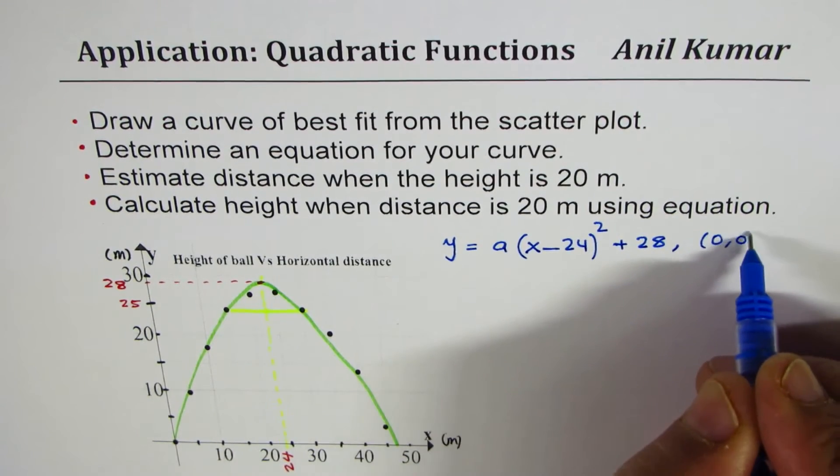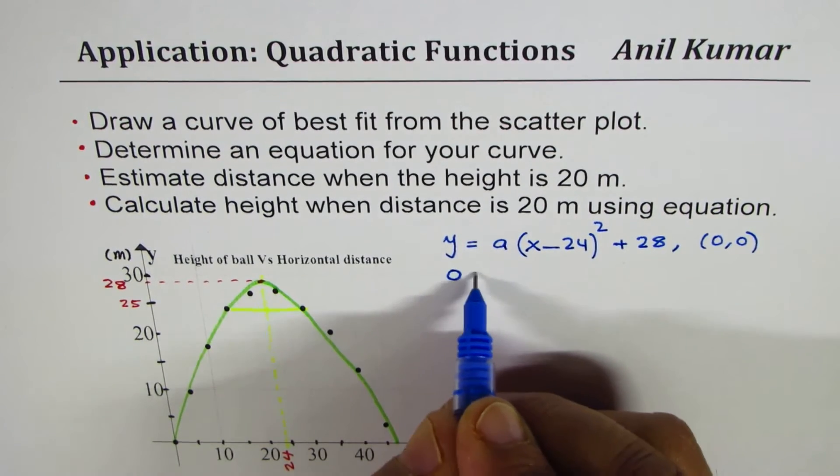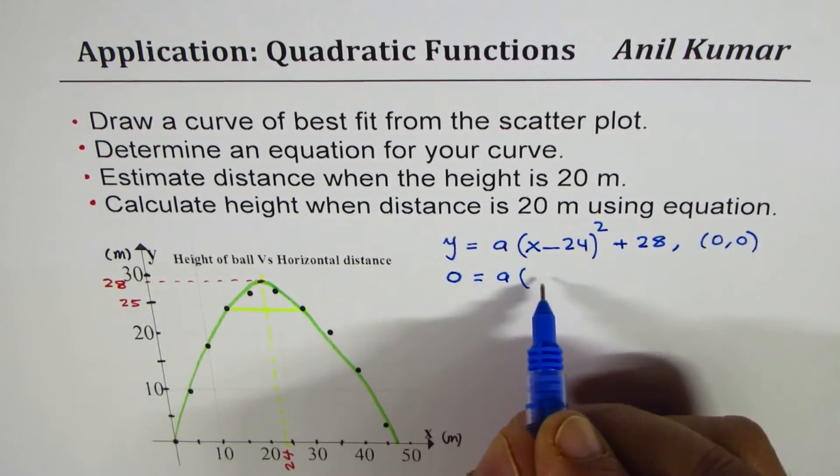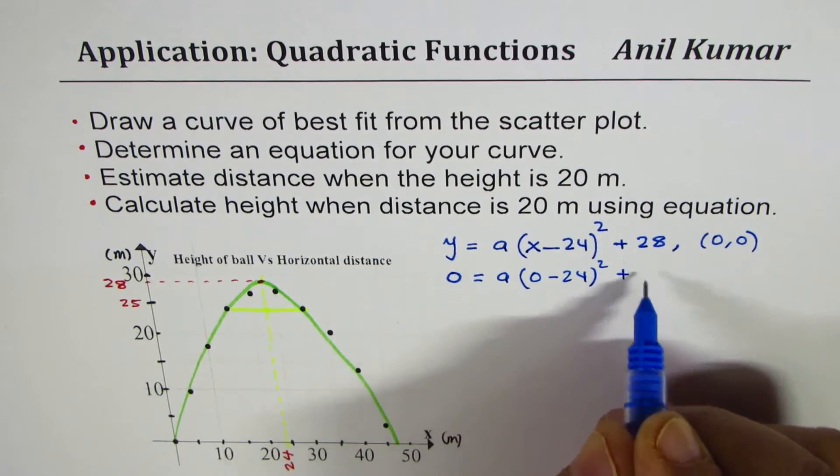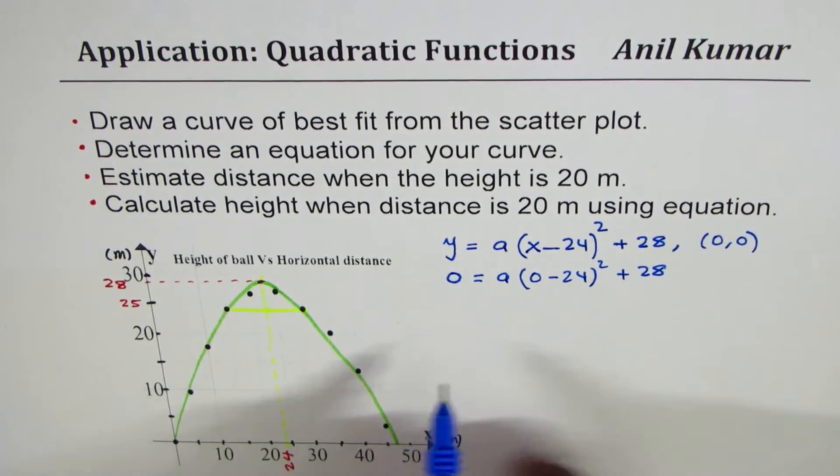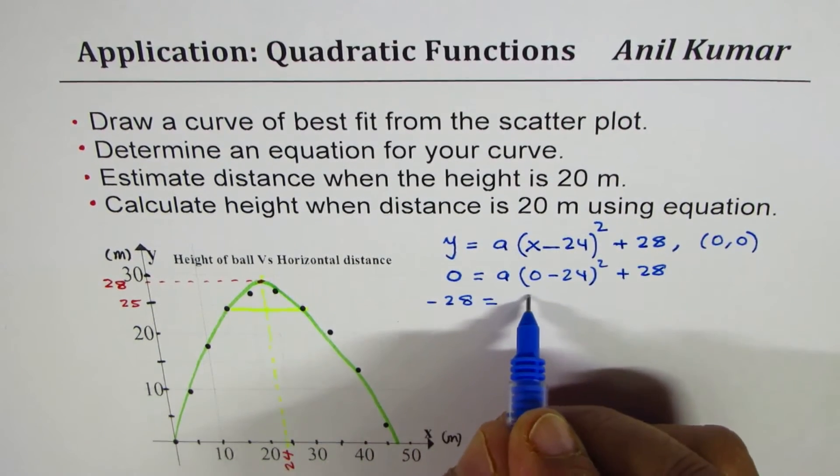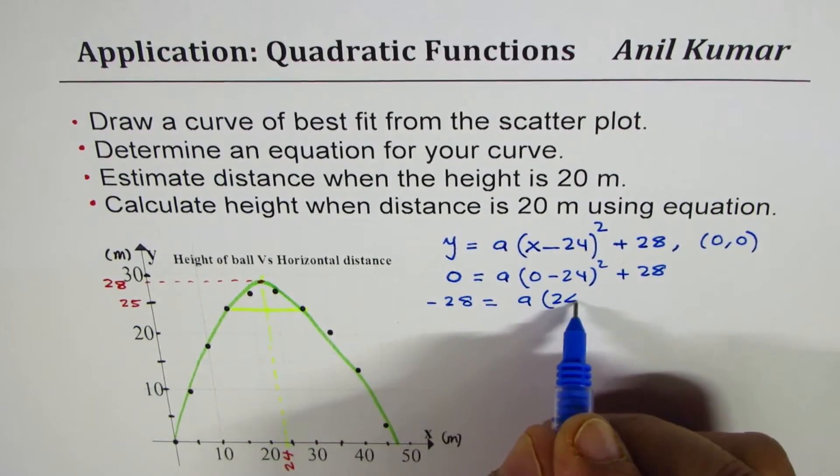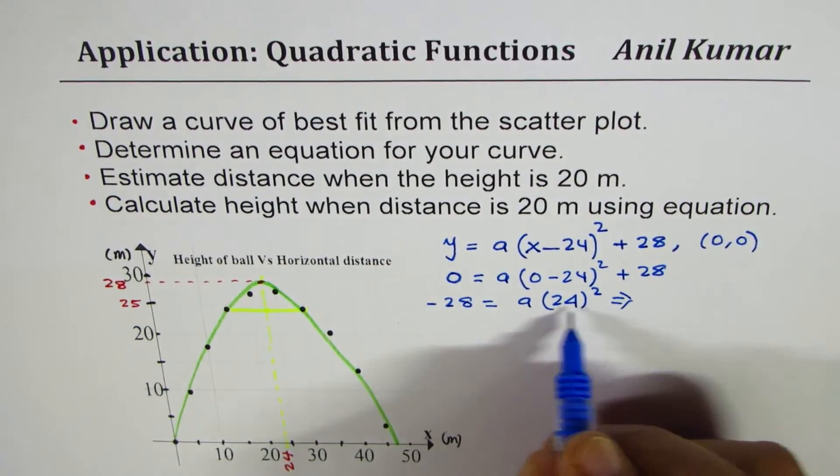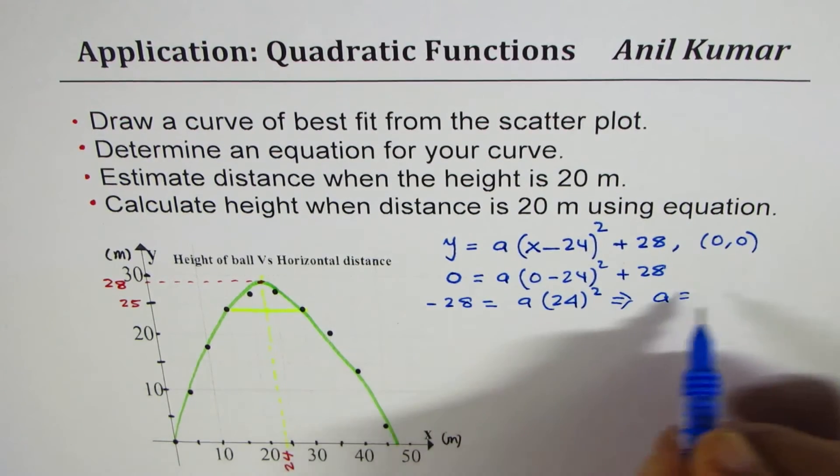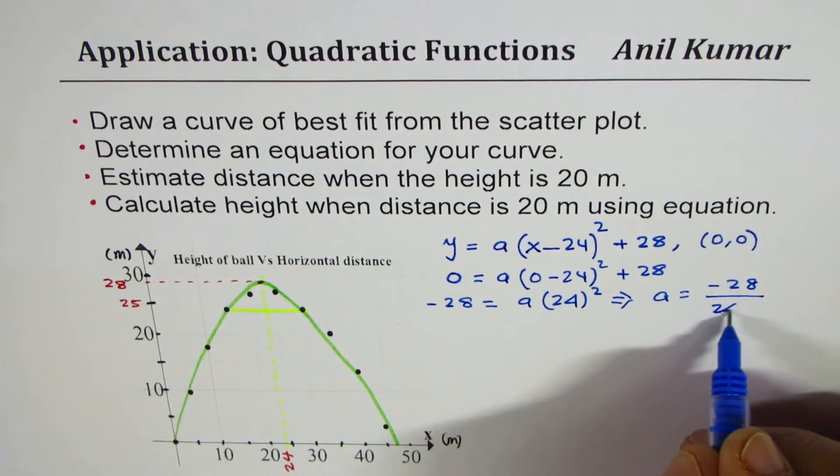If I substitute 0 for y, we get 0 = a(0 - 24)² + 28. Bringing 28 to the left we get -28 = a × 24². That will give me the value of a as -28 divided by 24².